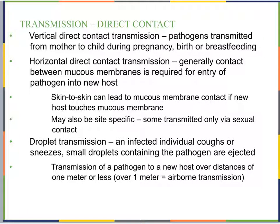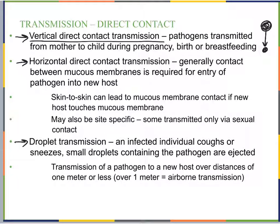Within direct contact, we have vertical direct contact transmission — when pathogens are transmitted from mother to child during pregnancy, birth, or breastfeeding. 'Vertical' refers to passing down the chain from one generation to the next. For example, if a mother is infected during pregnancy, the growing baby can become infected through direct contact. The pathogen can also be transmitted through the birth canal or through breast milk. This is vertical because it goes from one generation to the next.